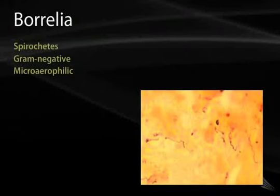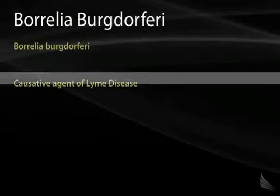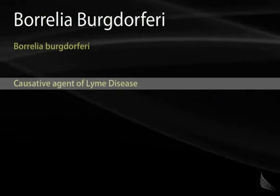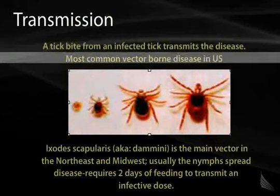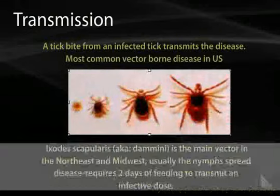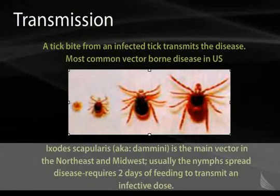Borrelia are also spirochetes — gram-negative and microaerophilic. Borrelia burgdorferi is the causative agent of Lyme disease. Transmission depends on a bite from an infected tick, making this the most common vector-borne disease in the United States. The tick involved is Ixodes scapularis (also Ixodes dammini), the main vector in the northeast and midwest. Usually nymphs spread the disease and require two days of feeding to transmit an effective dose.